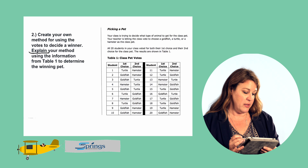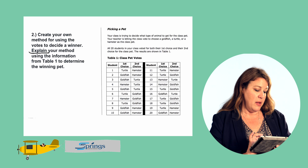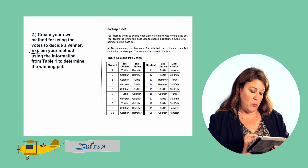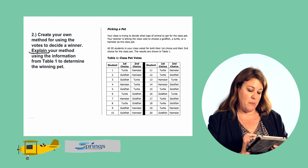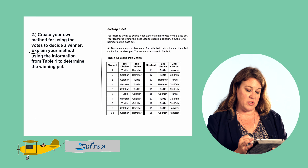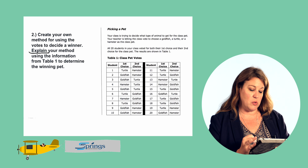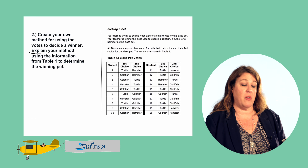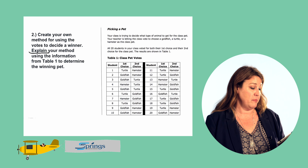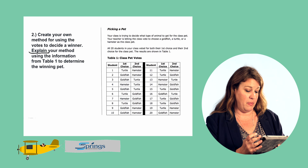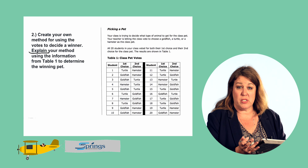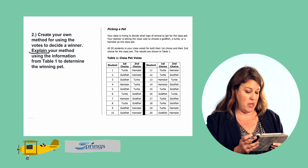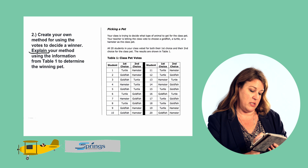So, create our own method for using the votes to determine a winner. It tells us total first choice votes and total second choice votes. What if we just add up the total number of votes for each pet — first choice and second choice combined? Let's do that.